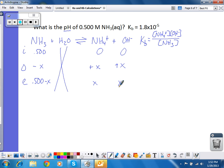So now let's start plugging things in. 1.8 times 10 to the negative 5th equals x squared over 0.5. x is equal to 3.0 times 10 to the negative 3rd, which is equal to the concentration of hydroxide and the concentration of ammonium.